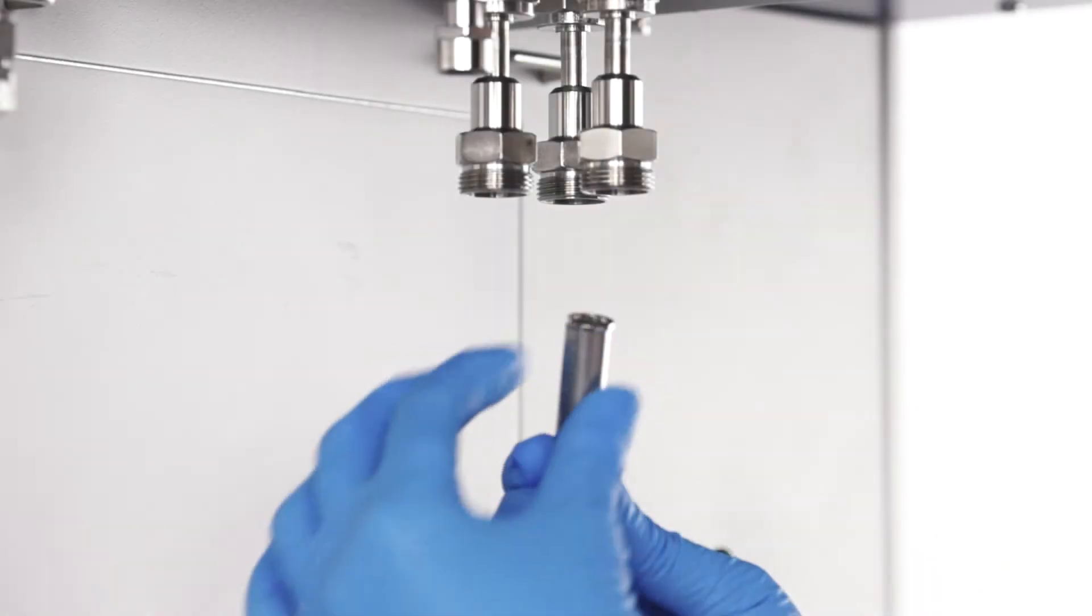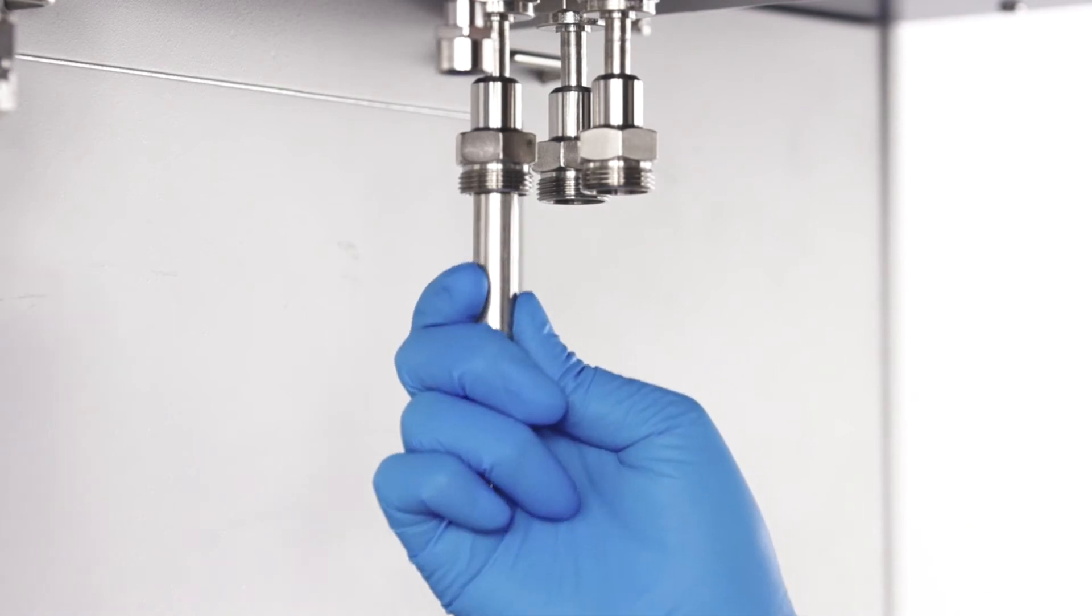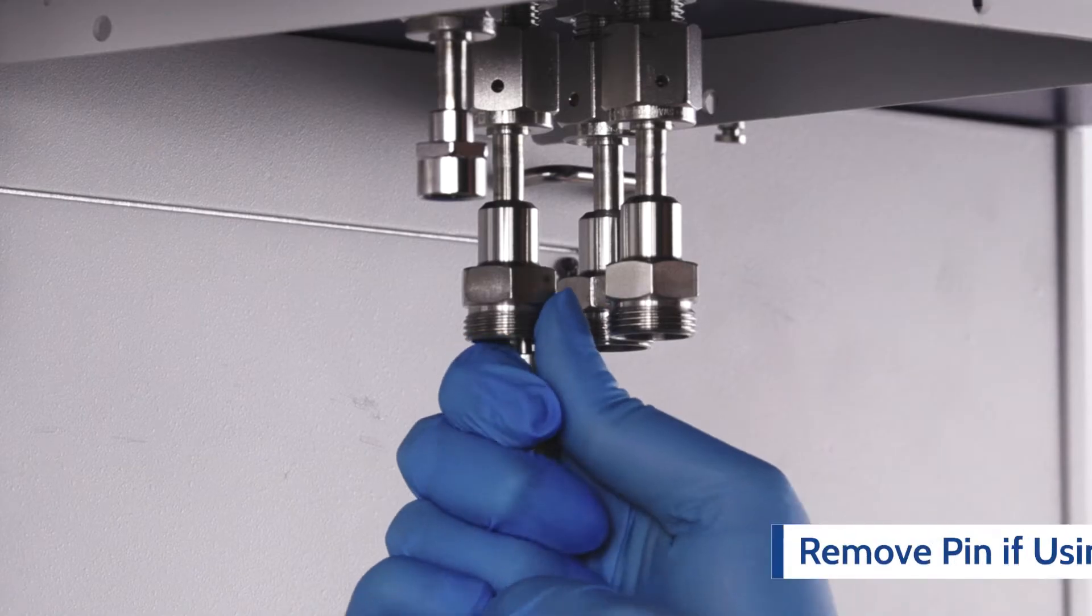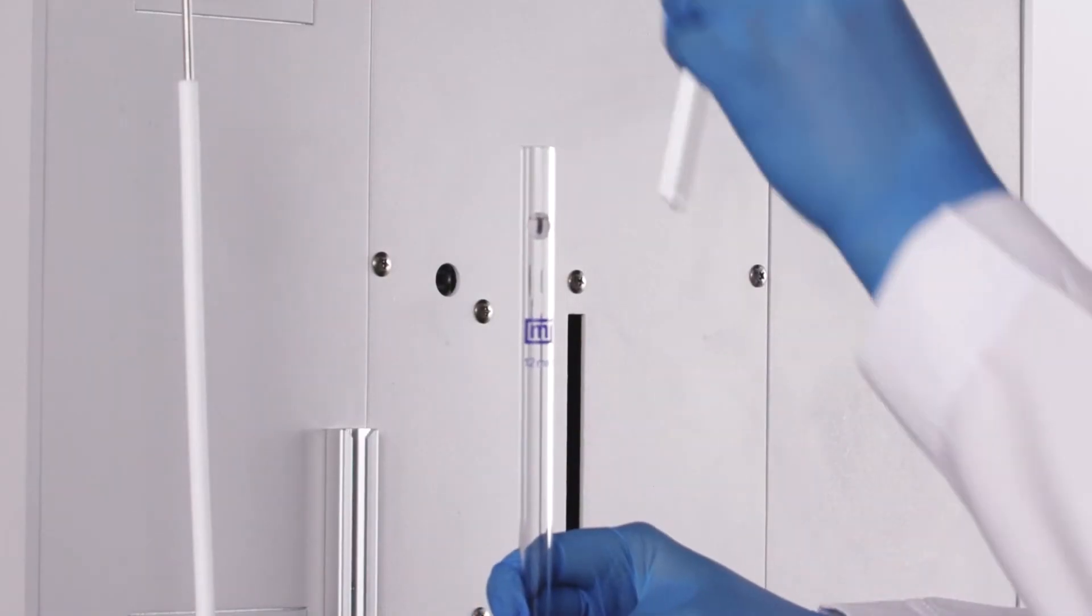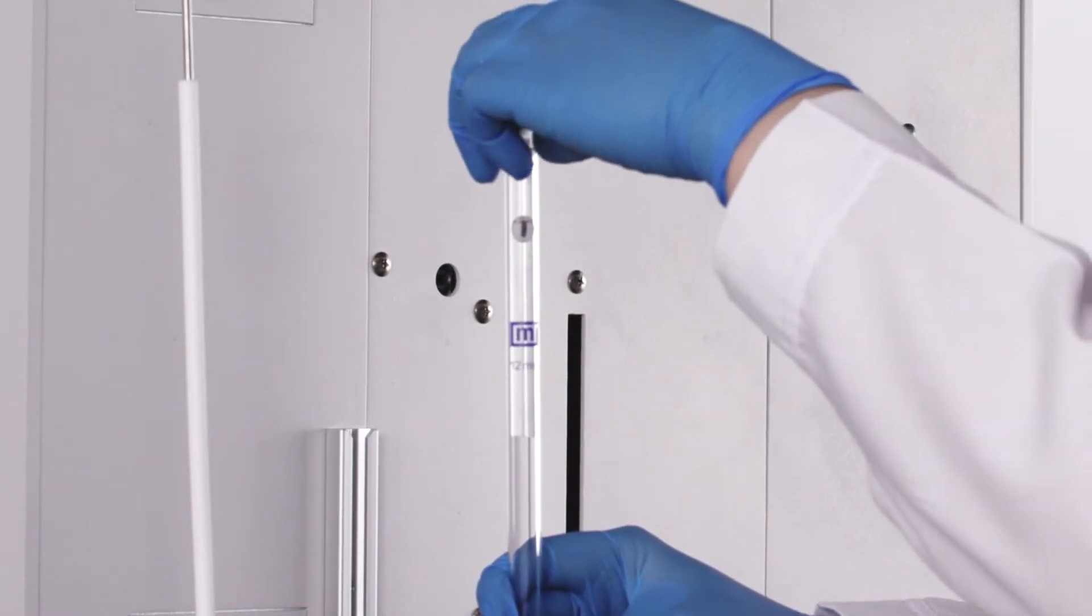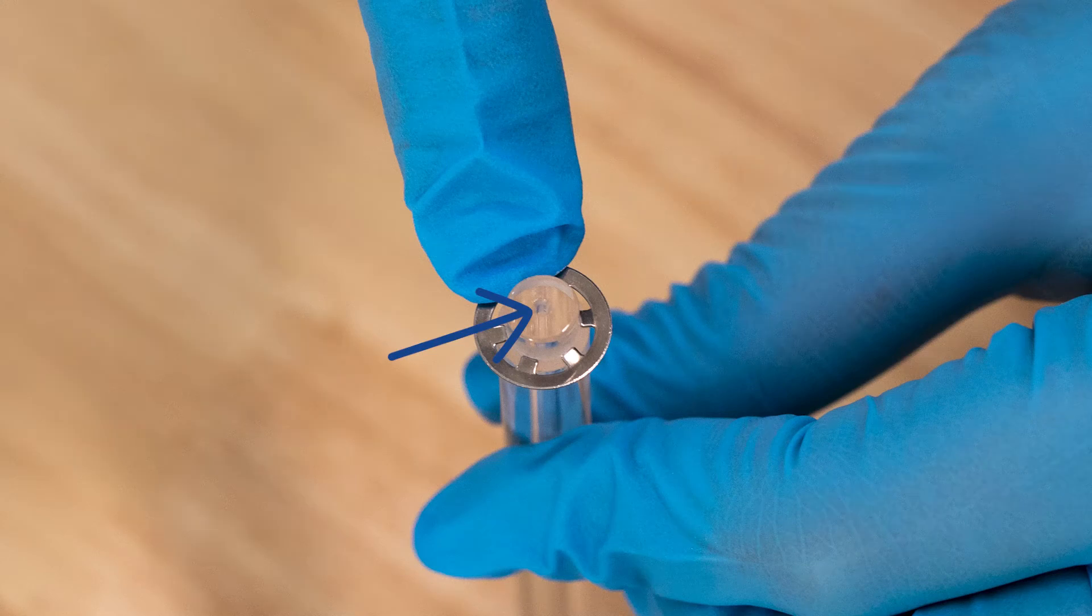Ensure the pins are installed in the sample port when a check seal is used. If you are using a rubber stopper, ensure to remove the pin from the sample port to place the additional hanging filler rod. The hanging filler rod has a precision bore hole that allows proper thermal transpiration correction calculations for micropore analyses.